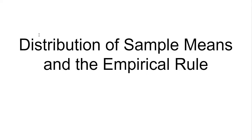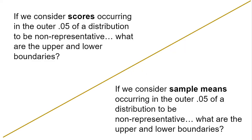We're taking a look at the distribution of sample means and the empirical rule. If we consider scores occurring in the outer 0.05 of a distribution to be non-representative, what are the upper and lower boundaries?